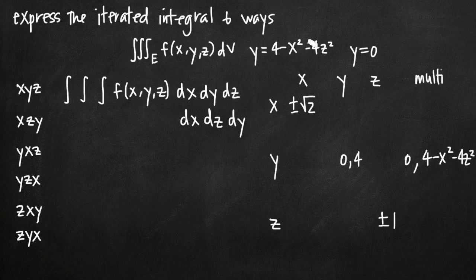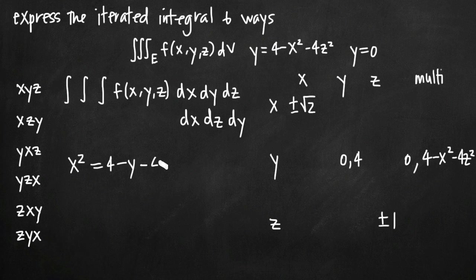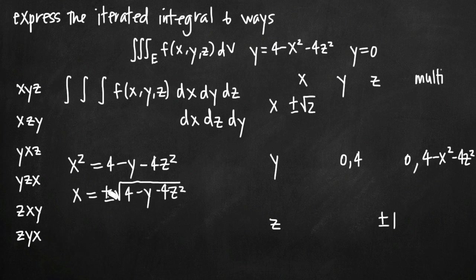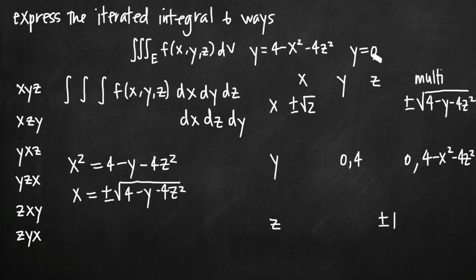For the multi-column entry for x, I solve for x: adding x² to both sides and subtracting y gives x² = 4 - y - 4z². Taking the square root, x = ±√(4 - y - 4z²). Those are my upper and lower limits of integration for x. Because I have positive and negative, I have two values for x. So x in terms of both other variables is ±√(4 - y - 4z²).